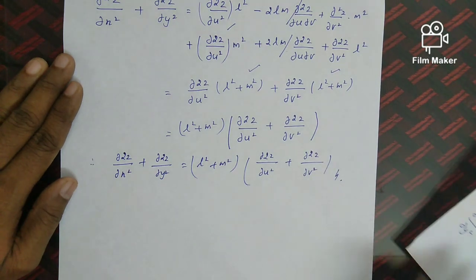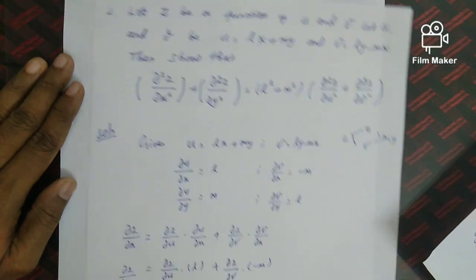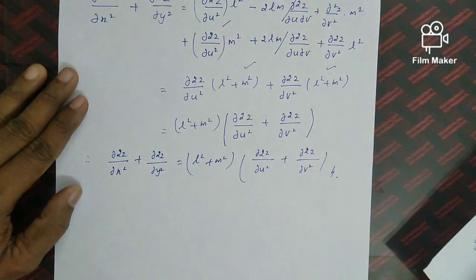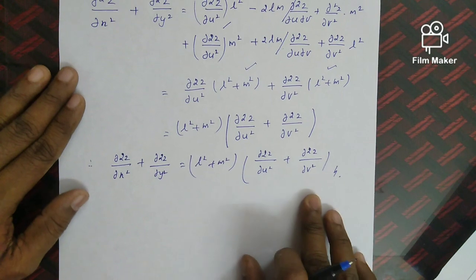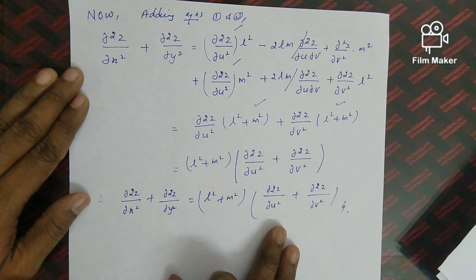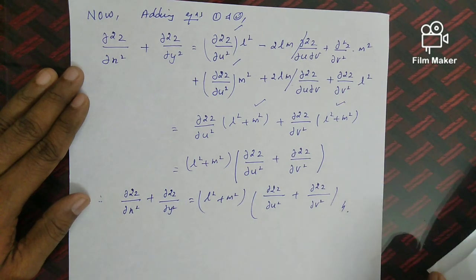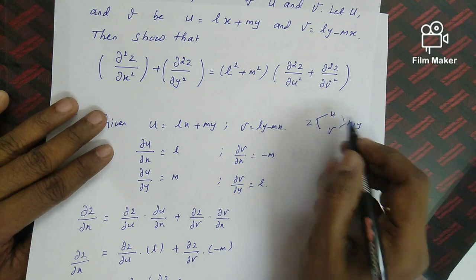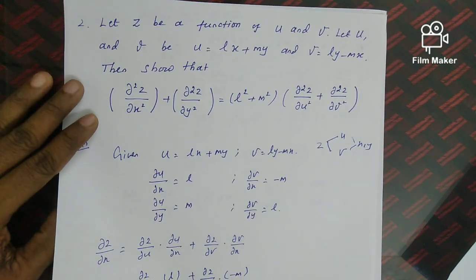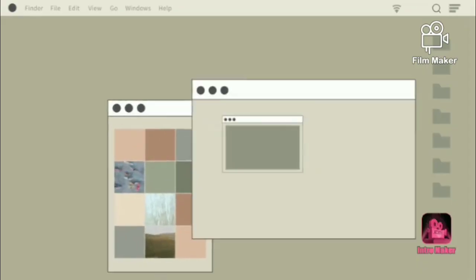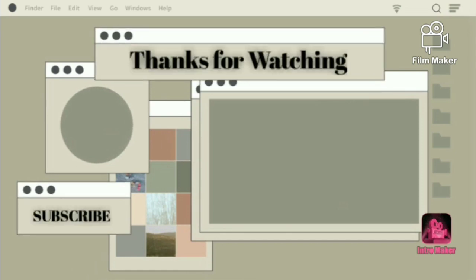We have arrived at the result: ∂²z/∂x² + ∂²z/∂y² = (l² + m²)(∂²z/∂u² + ∂²z/∂v²), which is exactly what we needed to show. This is the method for solving problems involving composite functions, where z is a function of u and v, and u and v are functions of x and y. Thank you.